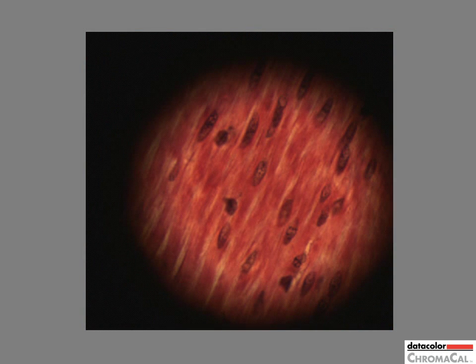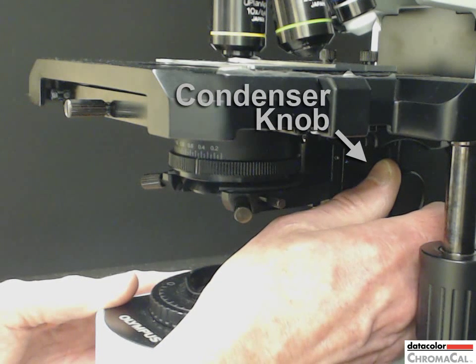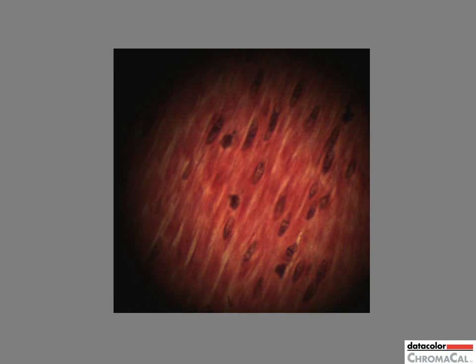Next, turn the knob of the condenser to focus the shadow image of the field diaphragm blades. Here's what you'll see on the microscope.